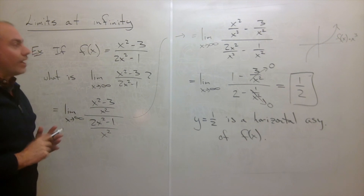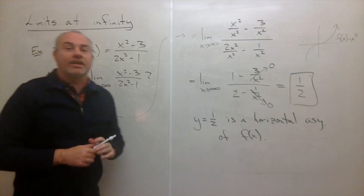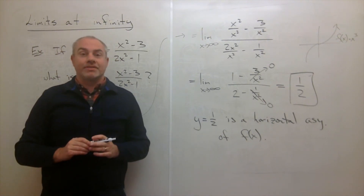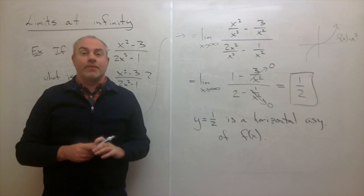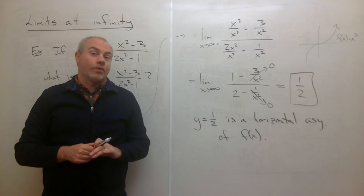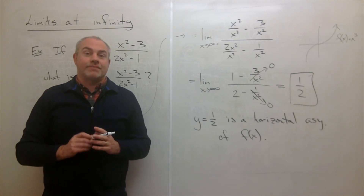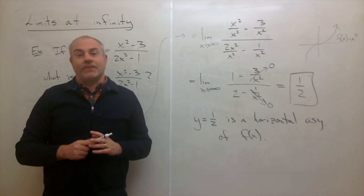So that's just for rational functions. That should give us what we need to get into some examples and see how we do more with these horizontal asymptotes and limits at infinity.